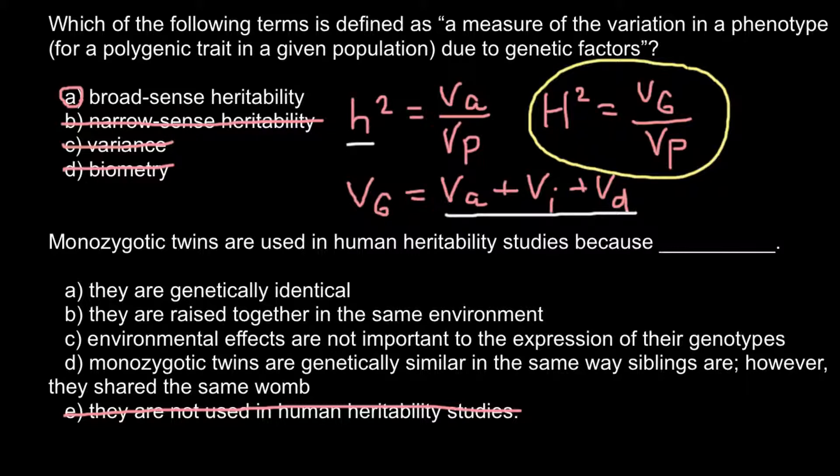Answer D — monozygotic twins are genetically similar in the same way as siblings are — is not true, because monozygotic twins share 100% of their genotype, while siblings share only 50%. So we can cross out this answer also.